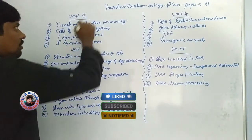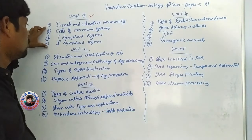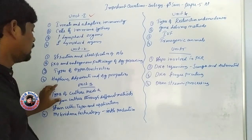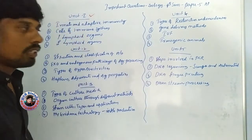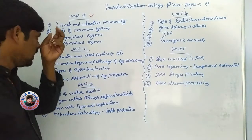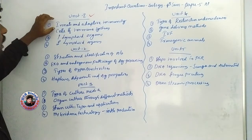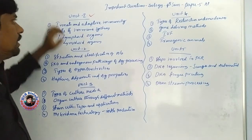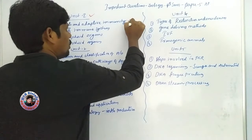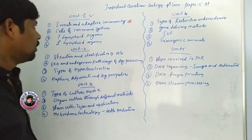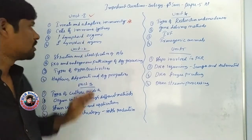First, Unit 1. Unit 1 — Adaptive Immunity, 10 marks, important question. Let us know the innate immunity — 5 marks. Adaptive immunity — 5 marks.